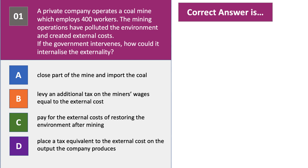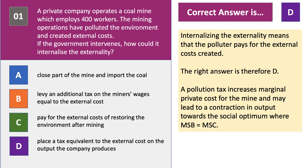Intervention designed specifically to internalise the externality — what's the right answer to question one? It is D. Internalising the externality means that the polluter pays for the external costs created. The mining operations create that divergence between social and private costs. The right answer is therefore D: a tax increases the marginal private costs for the mine and leads to a contraction in output, hopefully towards a social optimum where social benefit and social cost are equated.